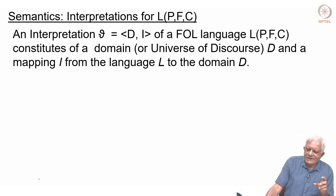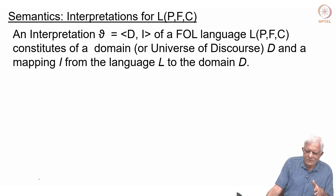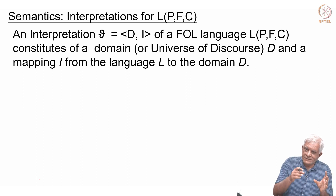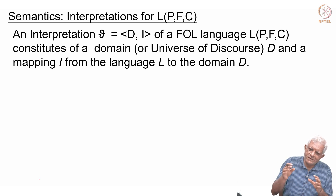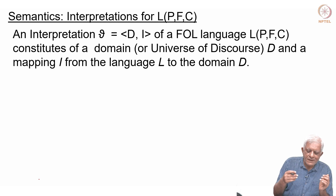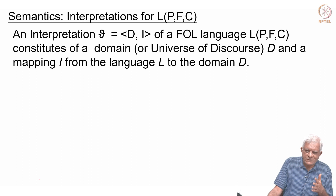In propositional logic an interpretation was just a valuation — we said P equals true, Q equals false, R equals true, and so on. For a certain choice of those values your knowledge base would become true; then we would say that is a model, and for others it may not be true. In first order logic we now have to say: you give me a domain also.